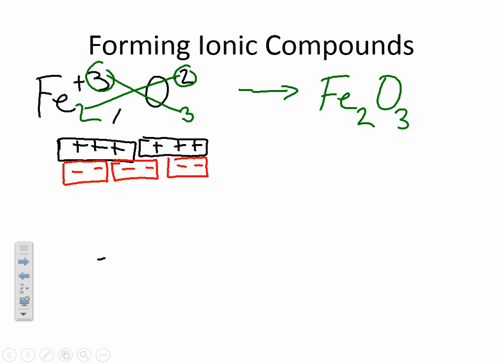Are we balanced now? You bet we are. How many irons do we have? Two. How many oxygens do we have? Three. Combine that together and we get Fe2O3.